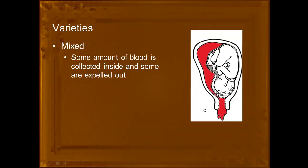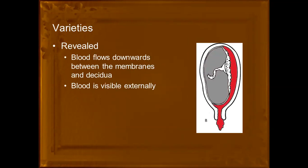The next is mixed type, which is a mixture of both. At the placental site, bleeding starts and half of the blood is collected behind the placenta while some of the blood is visible outside. So the three types are: revealed, concealed, and mixed.